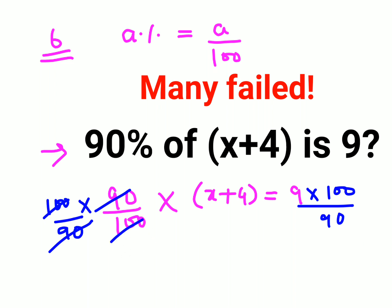This is cancelling. This is 1s are 10s are 1s are 10s are. So now I have x plus 4 equals to just 10.